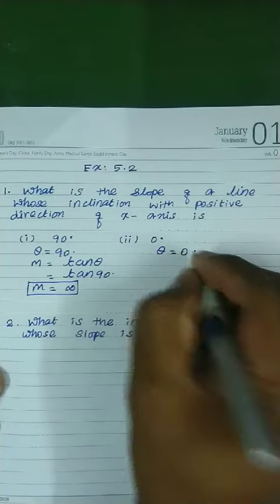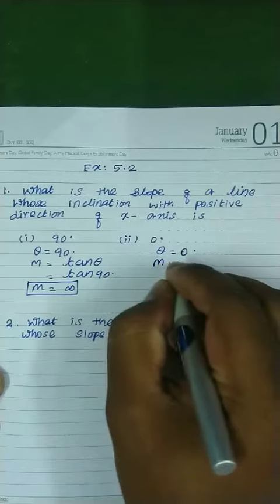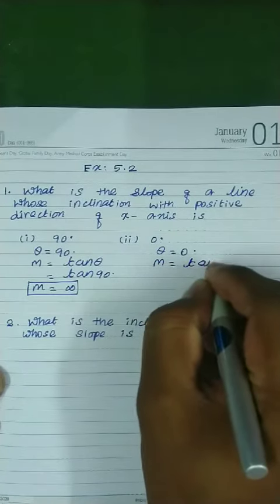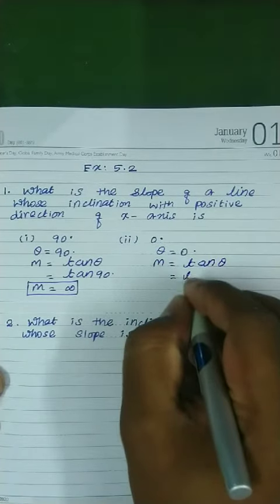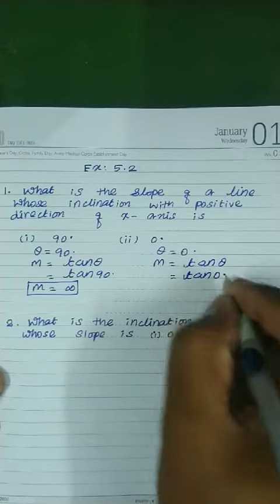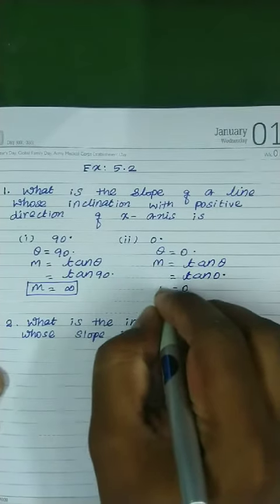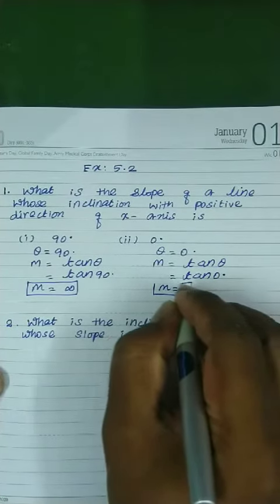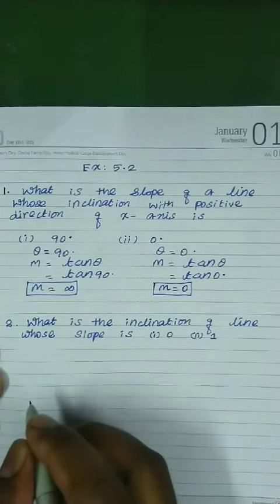Here theta equal to 0 degree. Slope m equal to tan theta. The value of theta is 0. The tan 0 is 0. So, slope m equal to 0.